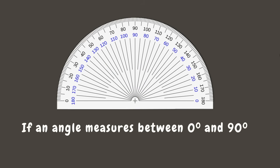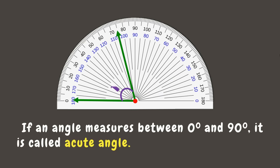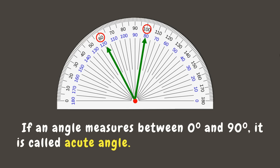If an angle measures between zero degrees and 90 degrees, then it is called an acute angle. For example, an angle measuring 30 degrees is an acute angle since it falls between zero degrees and 90 degrees. Also, a 75 degree angle is an acute angle since it's less than 90 degrees.